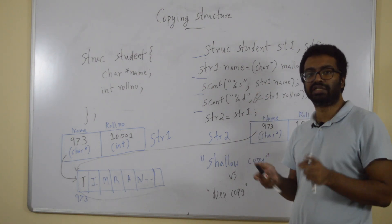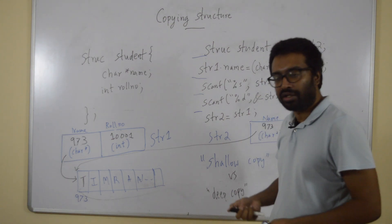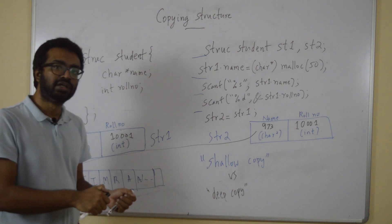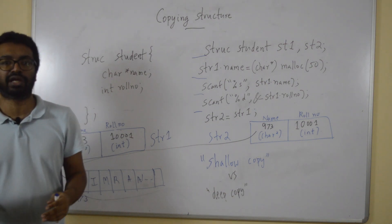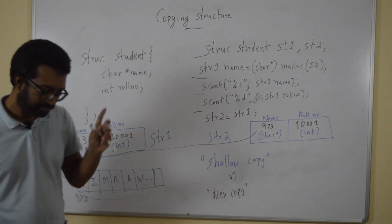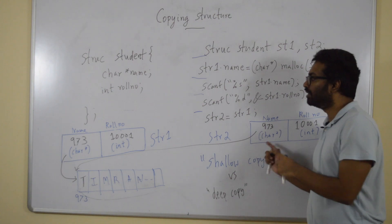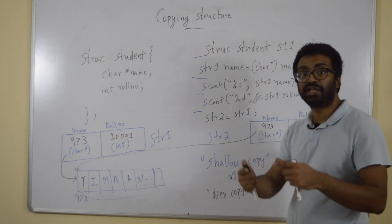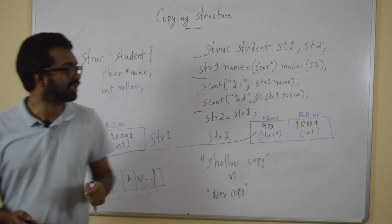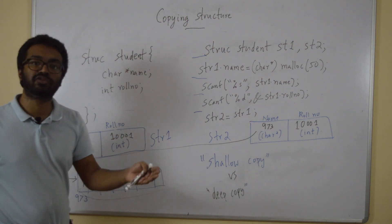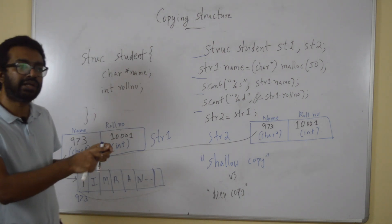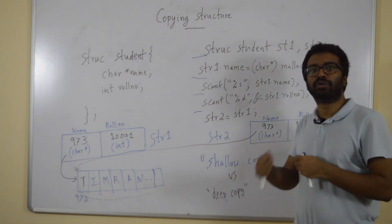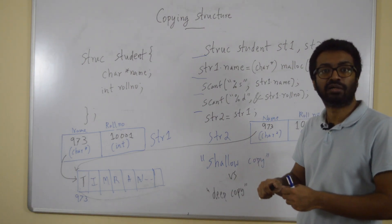This is something you need to keep in mind: it's a shallow copy that happens when you write str2 equal to str1 with pointers. Therefore, if you change a value in one location, you should keep in mind that the value is also changed when accessed from the other location. You also have to be careful about freeing that memory — you should not free memory that might still be used via another pointer.